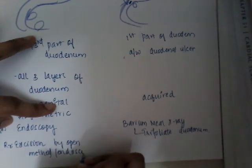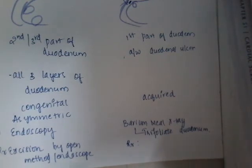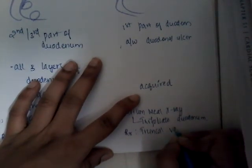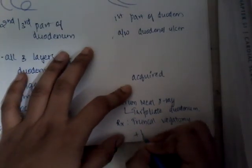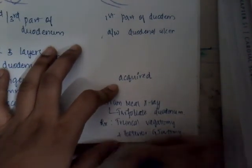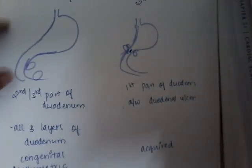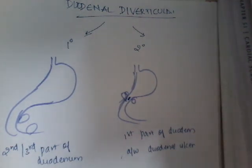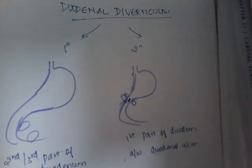Secondary duodenal diverticula are treated by truncal vagotomy plus posterior gastrojejunostomy, which we will learn about in our next class. So this is about duodenal diverticulum. In our next class we will learn about the major topic of gastric and duodenal ulcers. Thank you for watching. If you have any doubts, just comment in the comment section.